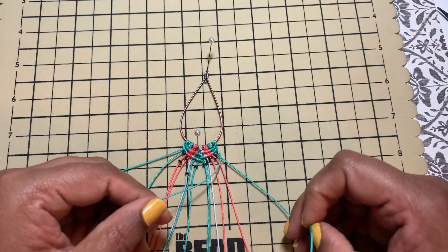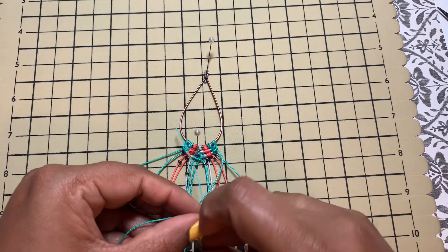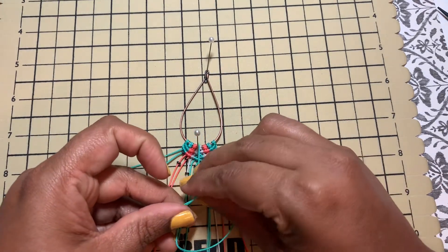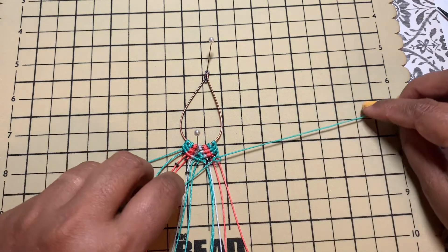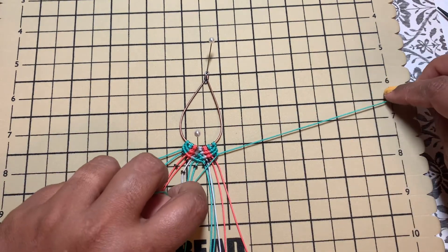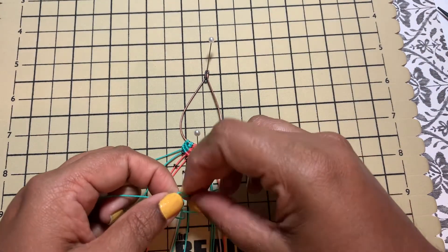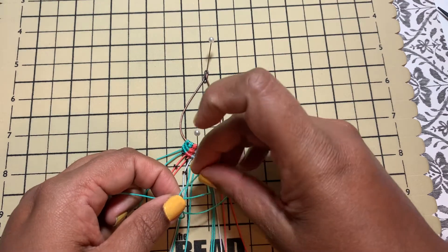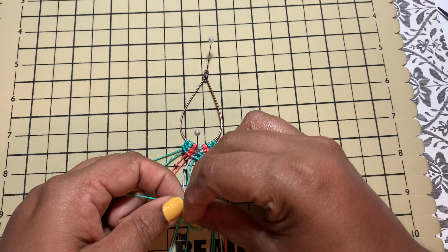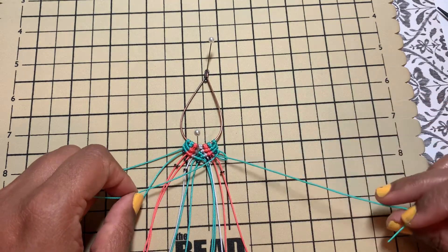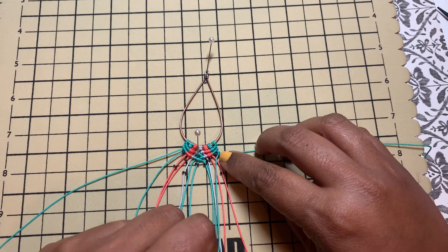There you go, you have this and then do the same knots as if there is no bead - just ignore the beads and do the knots. One and this is the second one. So that knot will capture the bead.